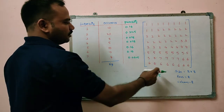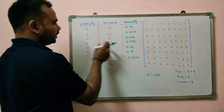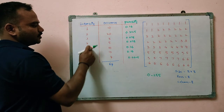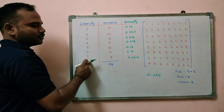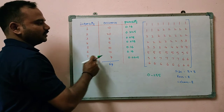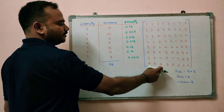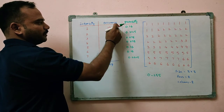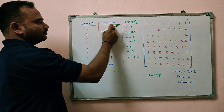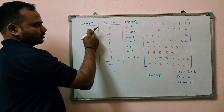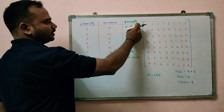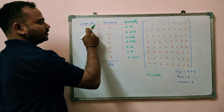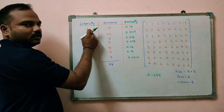Now, from this image, here I will take one table. In this table, the first column corresponds to the intensity values that are present in the considered image. And in the second column, I am considering the occurrence of the intensity values. And in the third column, I am considering the probability of occurrence of this intensity value.